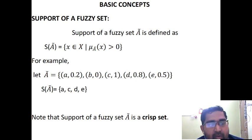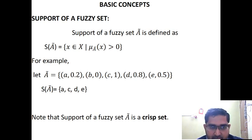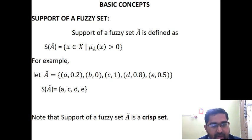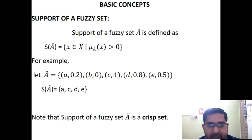Very important: A is a Fuzzy Set. But if you find the support of the Fuzzy Set, what is that? It is a crisp set — that is the difference. You may understand this through the example of S(A).